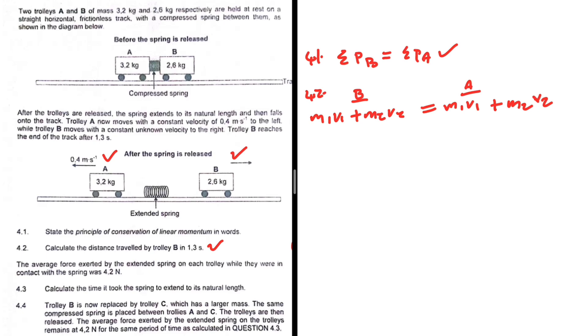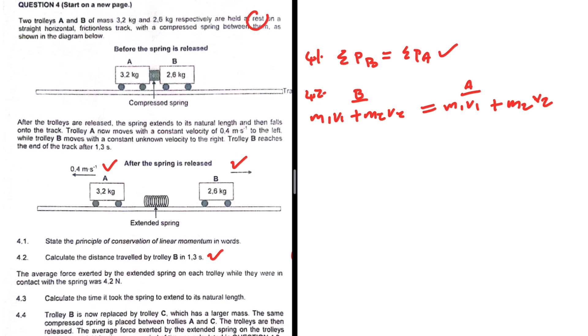So before the explosion we have the two objects that are held at rest, so m1, the mass of trolley A, that is going to be 3.2 multiplied by 0, plus m2, 2.6 multiplied by 0. And after the explosion—not the collision—in this special case of ours, the mass conserved 3.2, velocity, let's take direction to the left as—to the right is positive, so to the left is negative, so we're gonna have minus 0.4.